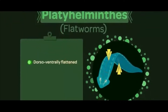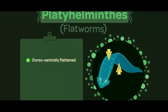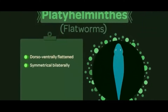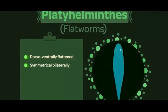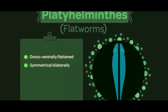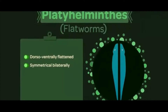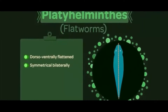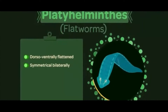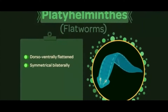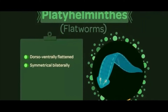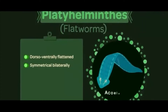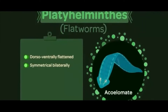This shape indicates that the body is bilaterally symmetrical, meaning it can be divided into two equal parts when cut through the central axis. These organisms do not have a true body cavity, which makes them acoelomate organisms.